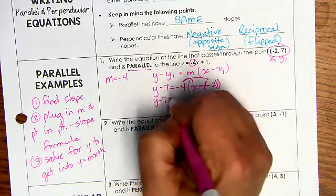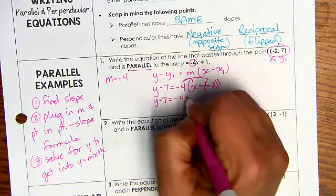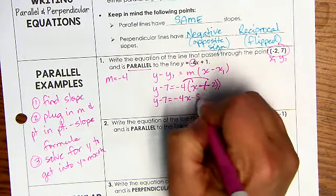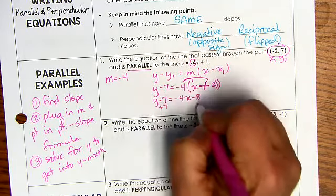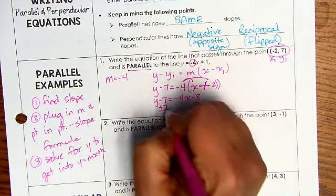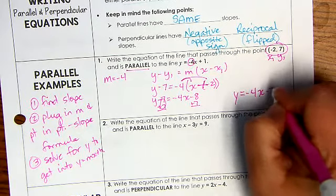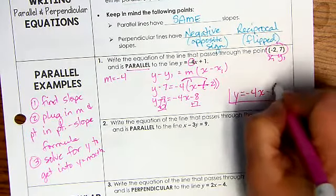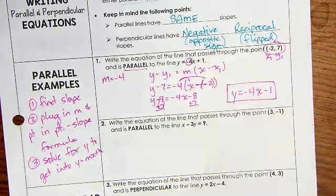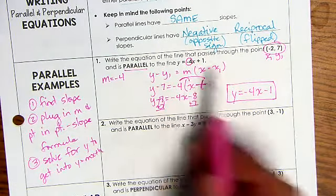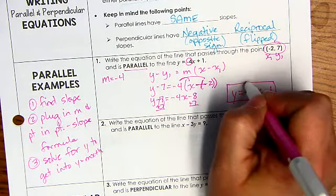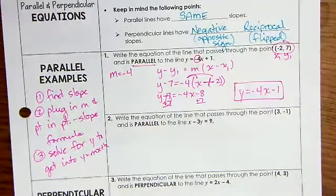So now I begin distribute. So I have y minus 7 equals negative 4x minus 8, add 7 to both sides and we end up with y equals negative 4x minus 1. So this is the equation that is parallel to this one.